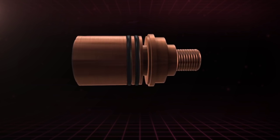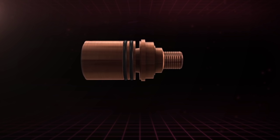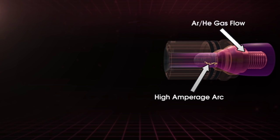The plasma torch consists of a water-cooled anode and cathode. An inert mixture of argon and helium gases flow around the cathode and through the anode, with a high amperage electric arc formed between them.